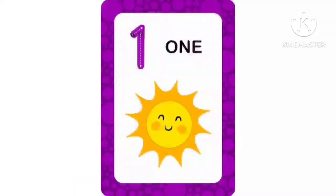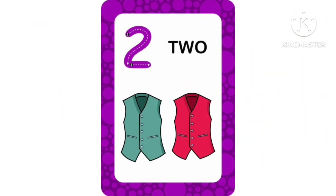1. O-N-E. 1. One Sun. 2. T-W-O. 2. Two Dresses.